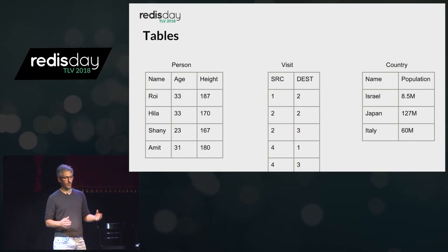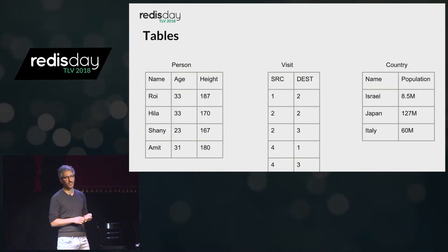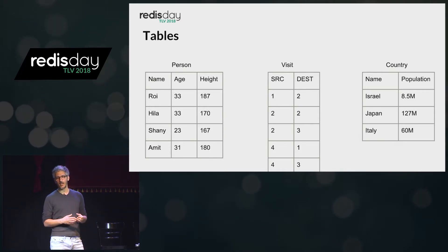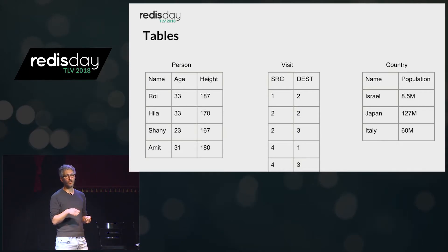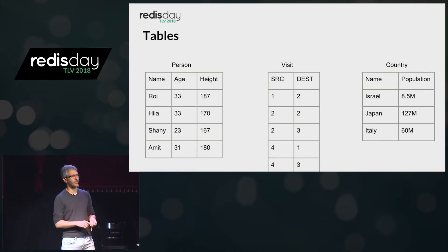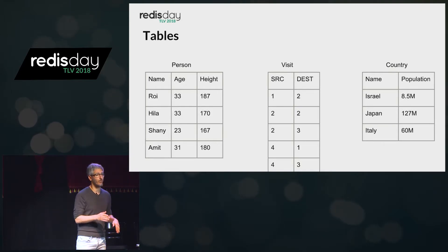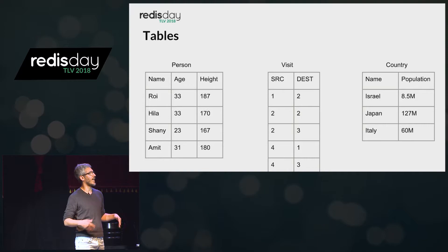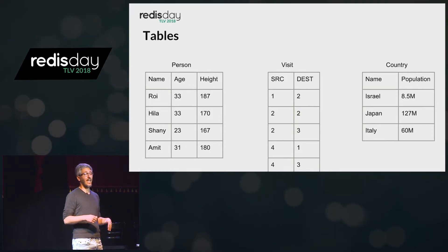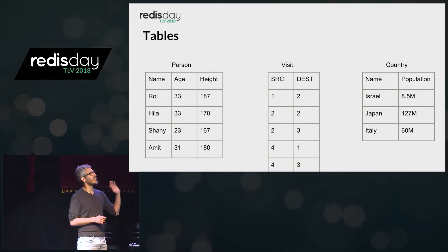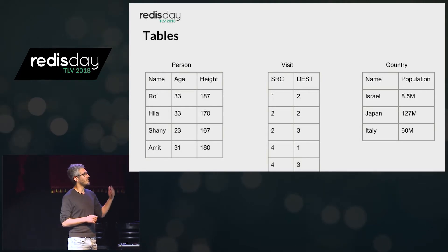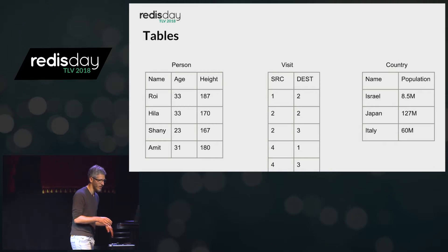By building on top of existing mature databases like MySQL, Oracle, or MS SQL, you get really mature features like replication, persistency, and distribution for free. If you can give users a graph API on top of tables without them realizing tables are used behind the scenes, you gain a lot. That was the motivation behind using tables to store graphs.